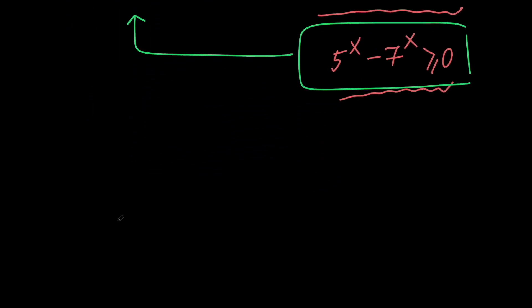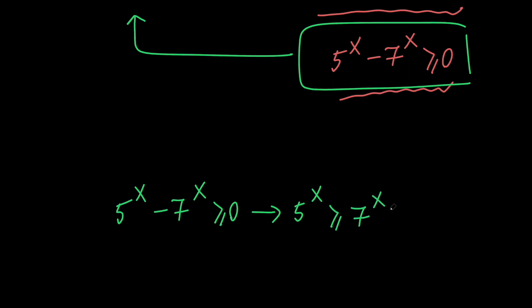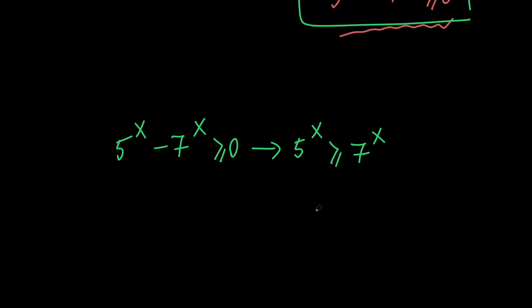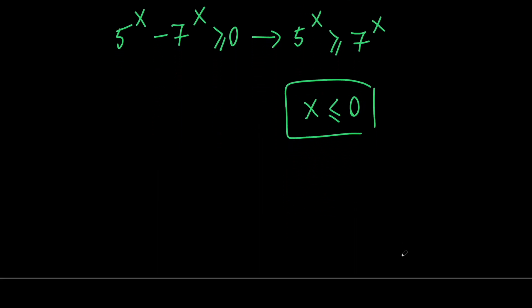We want 5 to the x minus 7 to the x to be non-negative, which means 5 to the x should be greater than or equal to 7 to the x. This is possible if x is less than or equal to 0, because for negative exponents 5 to the x is greater than 7 to the x, and for x equals 0 they are equal. So we want x to be less than or equal to 0. Let's solve our equation considering this restriction.